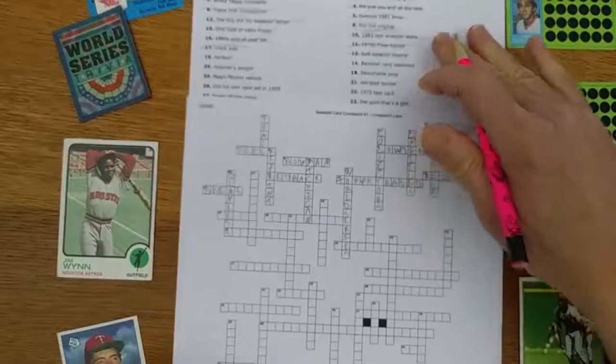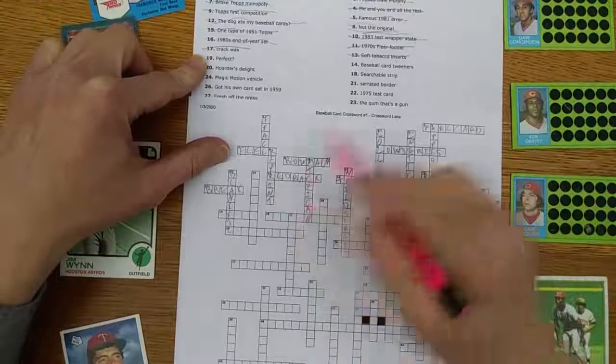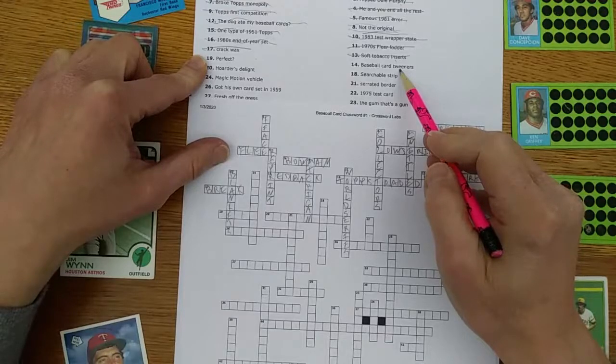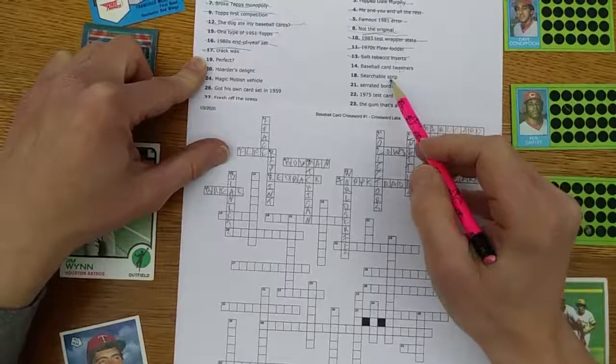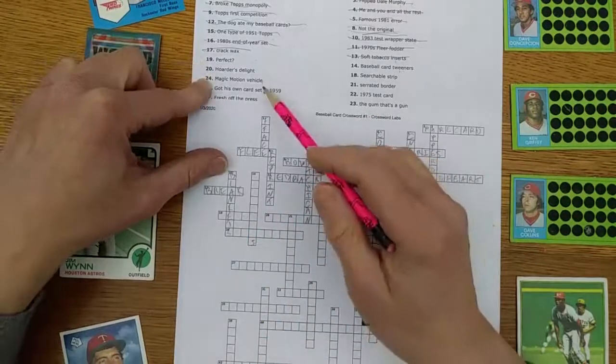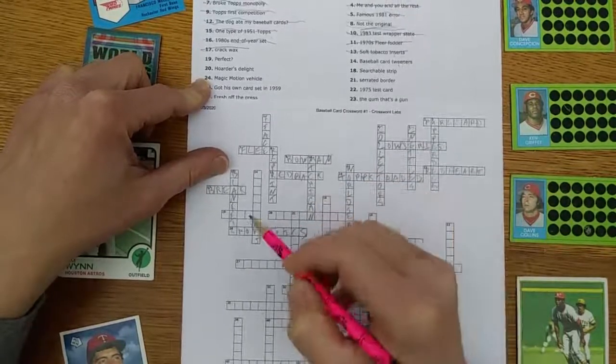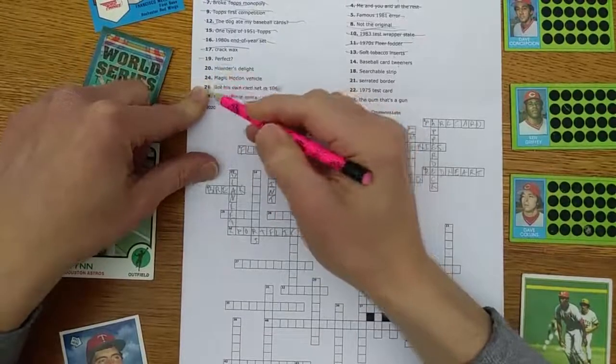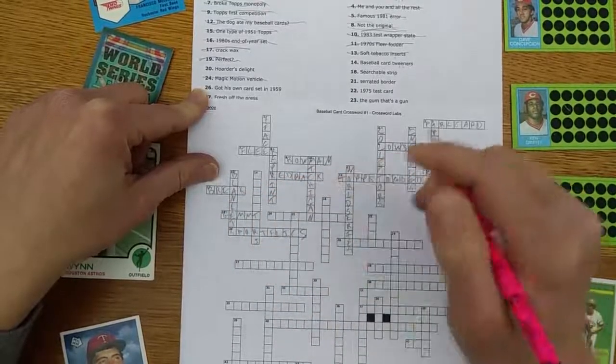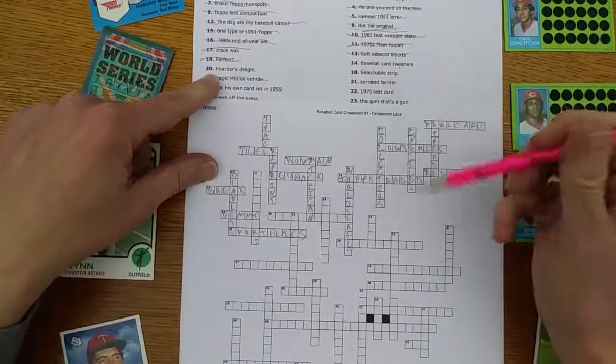Perfect - Mint. Maybe gem mint, G-E-M. Let's see what 14 down is: Baseball card tweeners. Hmm, what could that be? So figure it's got to end with an S. 24 across is magic motion vehicle, so that's sport flicks. And let's assume for now that this 19 across is gem mint. Yeah, sport flicks was the company that brought out the magic motion cards with three exposures on each card. They were kind of a mess, but we liked them at the time because they were new.